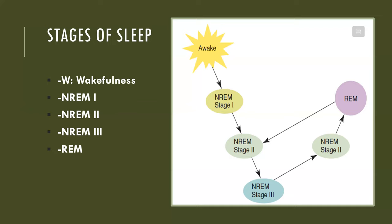NREM stage two is light sleep. You are easily aroused. Temperature, heart rate, and blood pressure are decreased slightly. It accounts for about half of your total sleep time.